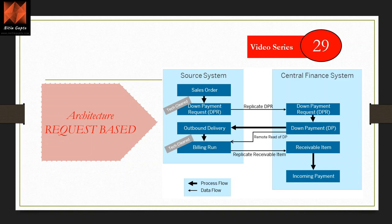Once the receivable item is posted in CFIN, an incoming payment happens on the Central Finance system. This is the overall architecture for request-based: starting from the sales order through to incoming payment, showing both the business process flow and the technical data flow.